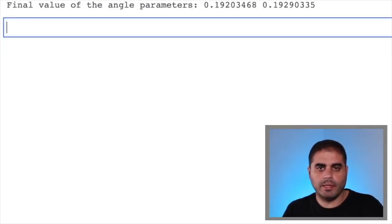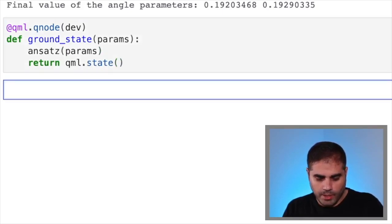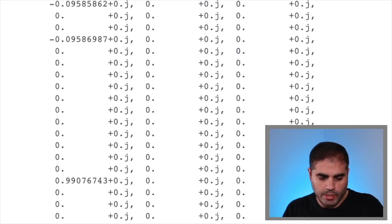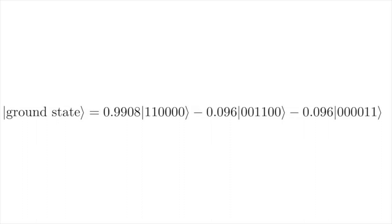So now we can ask PennyLane what the actual ground state is. So in order to do this, we can build a similar qnode to that of cost function, except that we return qml.state. So it would look something like this. And we return qml.state. And let's see what the state is for the optimized parameters theta. And we get something like this. If you are careful enough, you will see that the state corresponds to what I'm showing you on the screen right now.